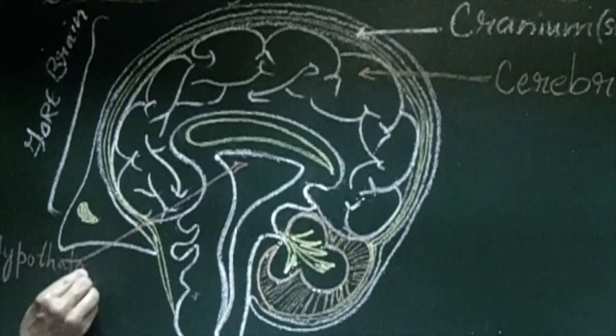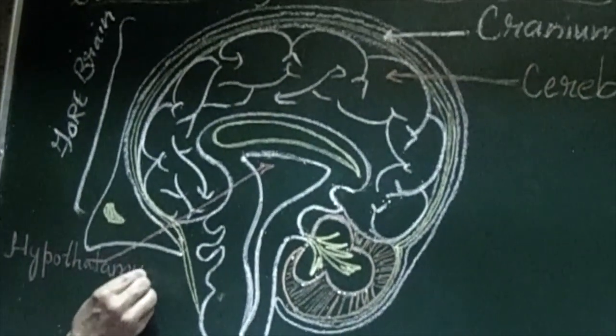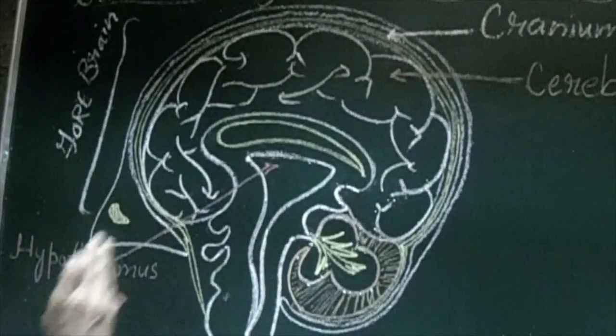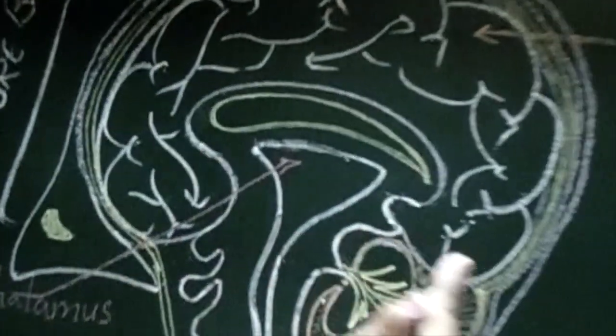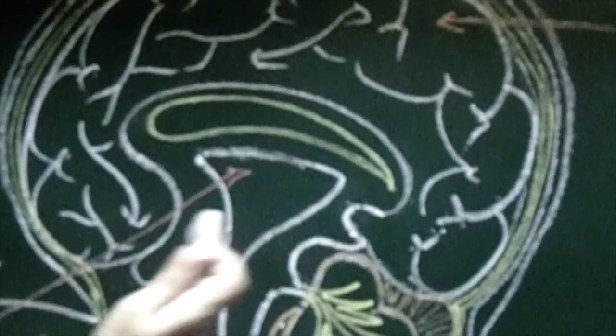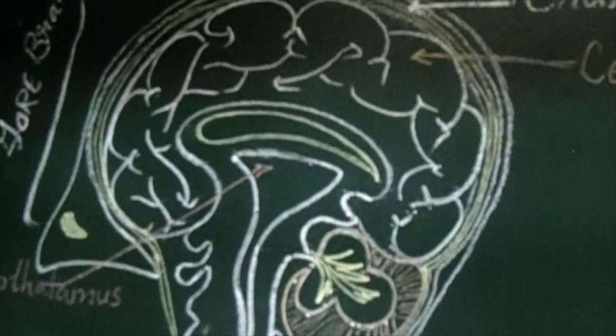Hypothalamus. So this is the part of forebrain. What are they? Cerebrum and then diencephalon. Diencephalon consists of hypothalamus as well as thalamus. Let us see what are the functions of hypothalamus. Hypothalamus regulates body temperature, water balance, appetite and sleep. It also controls autonomic nervous system, ANS and pituitary gland.